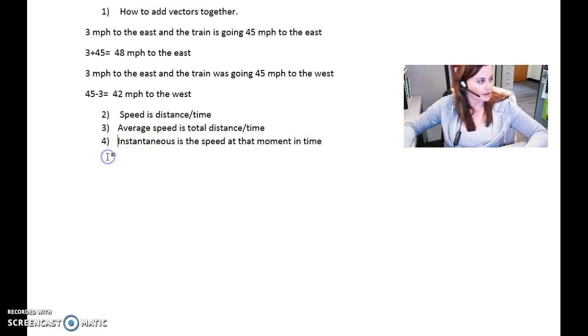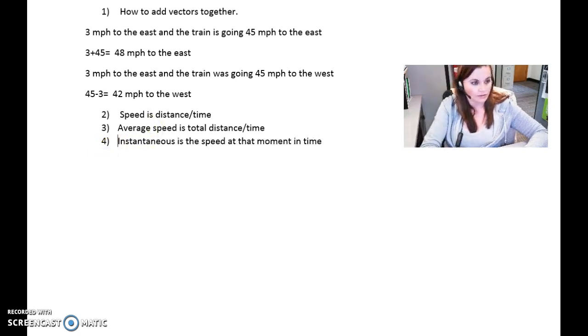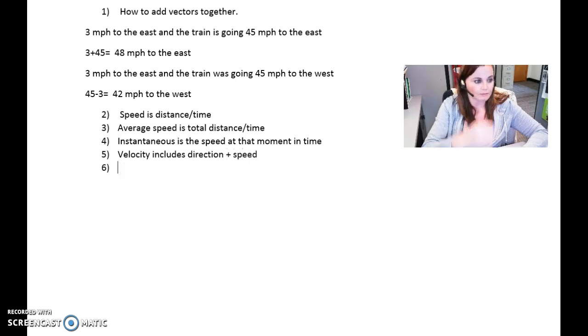So the difference between speed and velocity: remember, velocity includes direction plus the speed. Sometimes we say a vector is including the magnitude plus direction. Magnitude is just the numeric value, so in this case 60 miles per hour to the west or to the east or to the north.